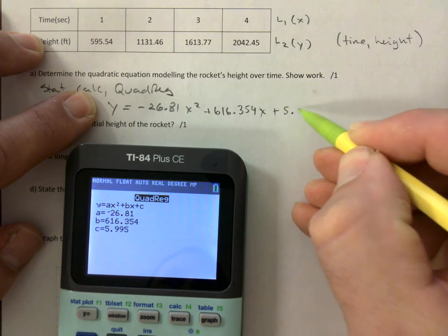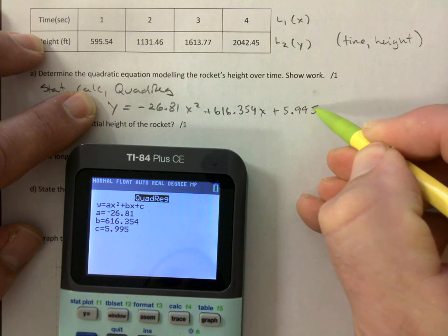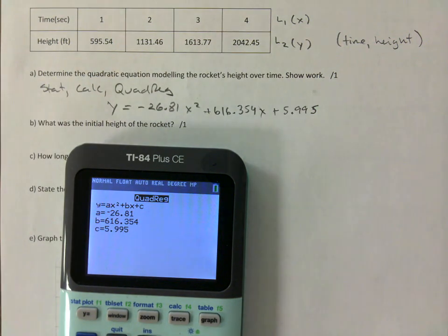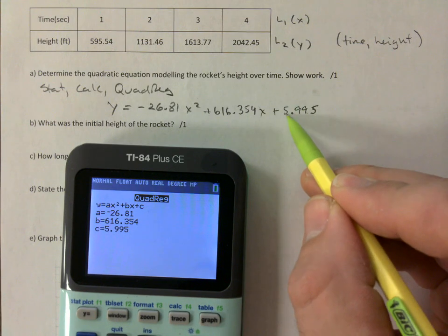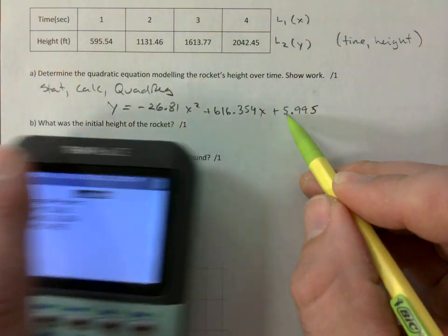And then you just tell me the equation. So that would be y = -26.81x² + 616.359x + 5.995. You could do two decimals, in which case that would round to 6. Because this 9 goes to 10 bumps, this to a 10 bumps, that to a 6. So that would be acceptable as well.